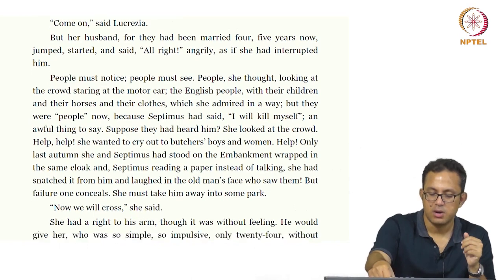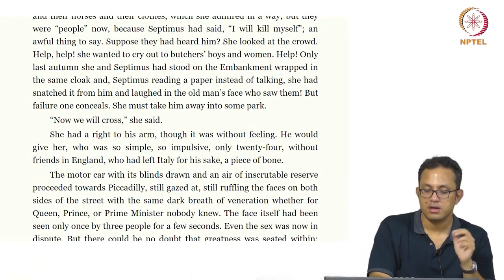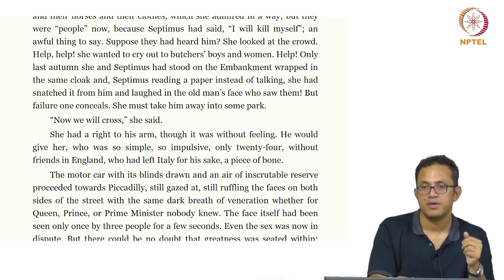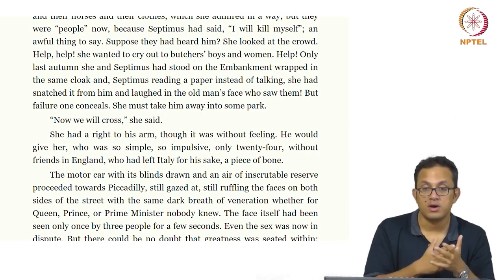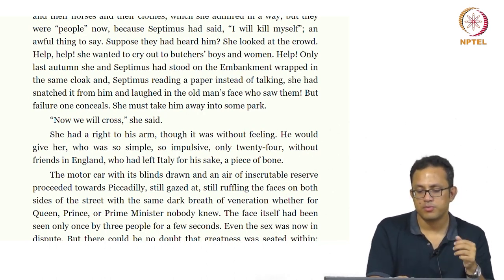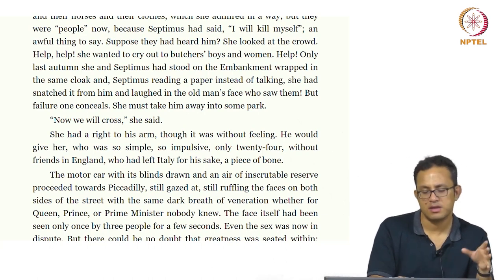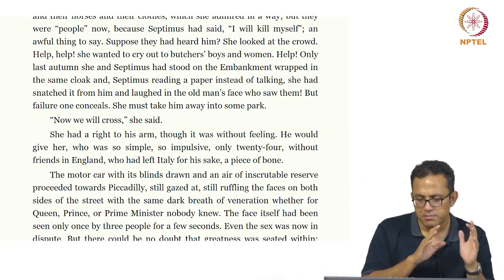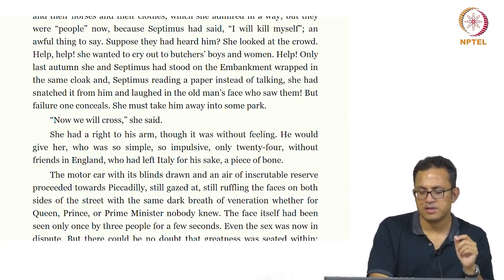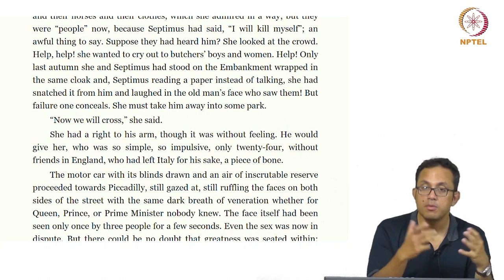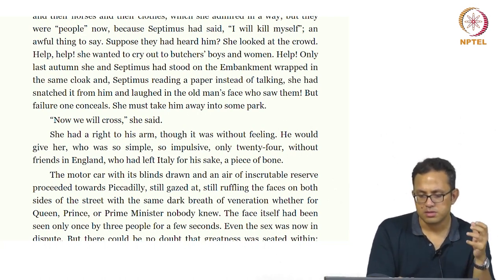'Now we will cross,' she said. She had a right to his arm, although it was without feeling. He would give it to her — a giver who was so simple, so impulsive, only 24, without friends in England, and who had left Italy for his sake.' Lucresia, the Italian woman Septimus married, finds herself completely homeless in London — she does not know anyone and cannot connect to anyone. The political context is interesting: an English soldier bringing an Italian wife to London undercuts political alliances, showing how human relationships are formed despite, and consumed by, political ones.